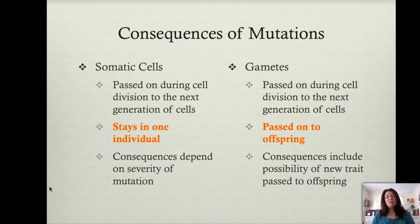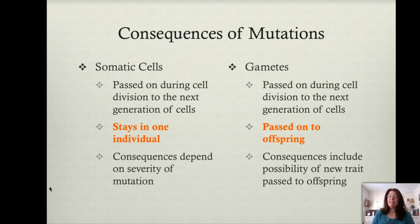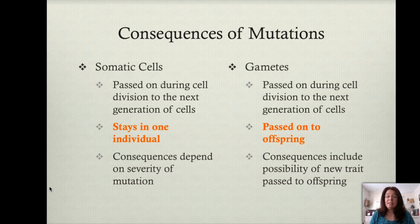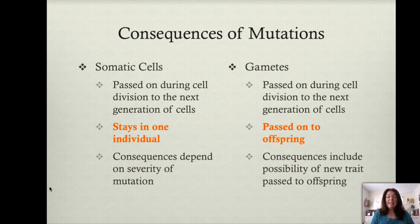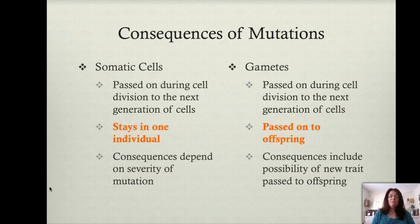This has huge implications if a gamete experiences a mutation. If a somatic cell experiences a mutation during the time that the DNA is replicated, that mutation is going to be passed on to the next generation of those cells. For example, if you experience a mutation in a kidney cell, that cell is going to pass that mutation on to the next generation of kidney cells that get made. This mutation therefore is going to stay in that one individual organism. Now don't get me wrong, it can be very serious — this is the basis of cancers, for example. But the consequences are only on that one organism.